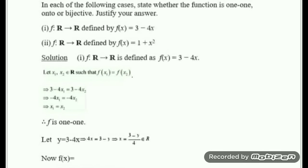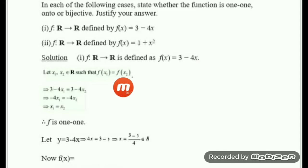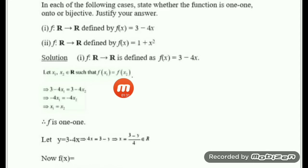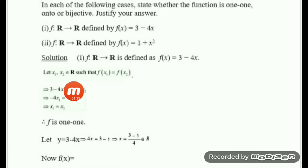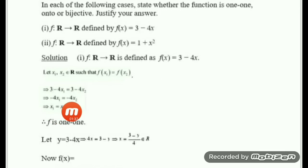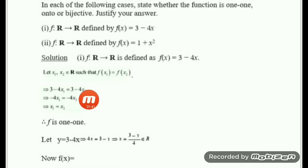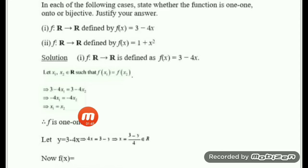After that, we use the definitions of f(x1) and f(x2). Your f(x) is 3 minus 4x, so f(x1) = 3 minus 4x1 and f(x2) = 3 minus 4x2. The 3's cancel out, leaving minus 4x1 = minus 4x2. Dividing both sides by minus 4, we get x1 = x2.